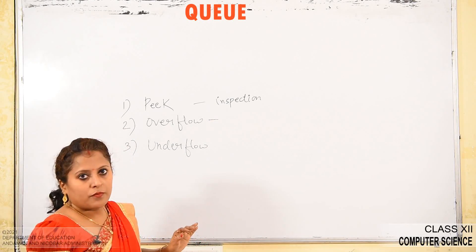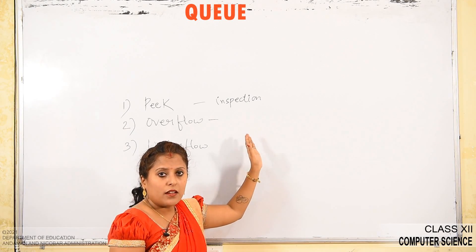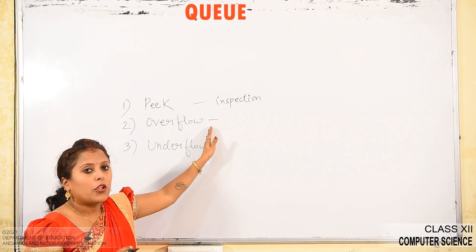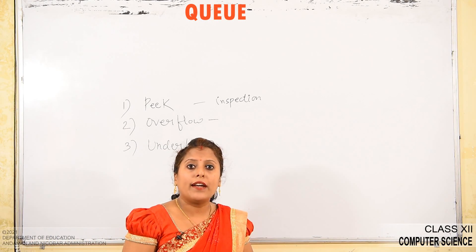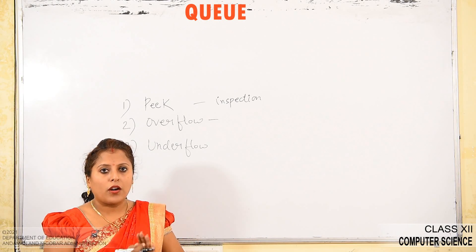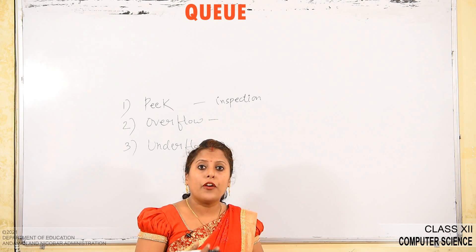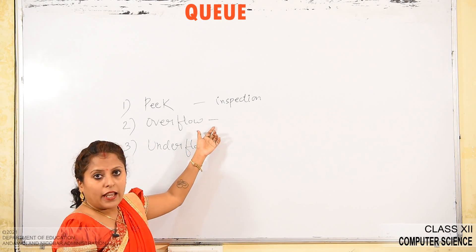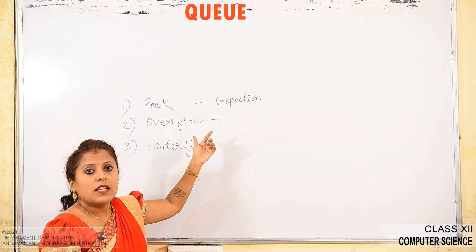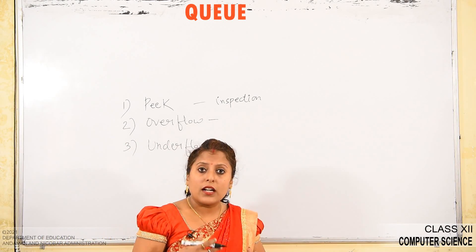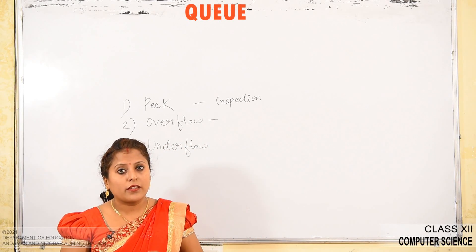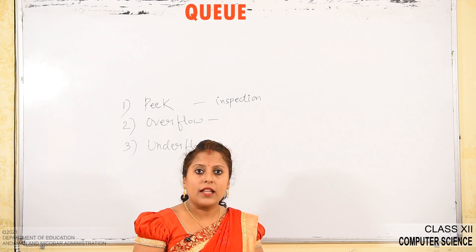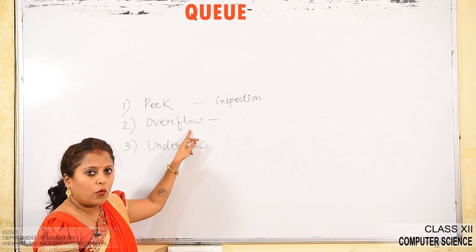Overflow is a situation — an error — that occurs when you are trying to insert an element into a queue which is already full. Suppose the queue capacity is 4, and already 4 elements are present. If you try to insert a 5th element, no memory is left, and an error occurs called overflow.